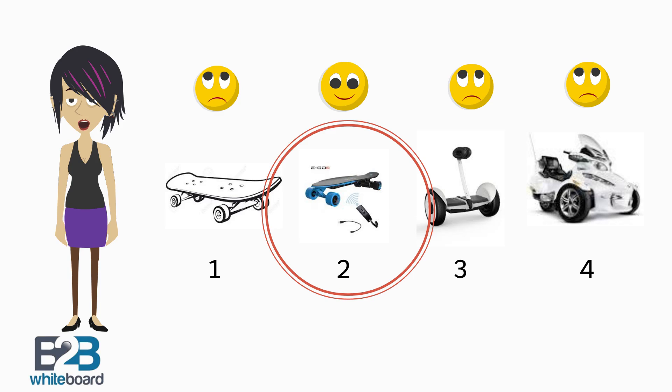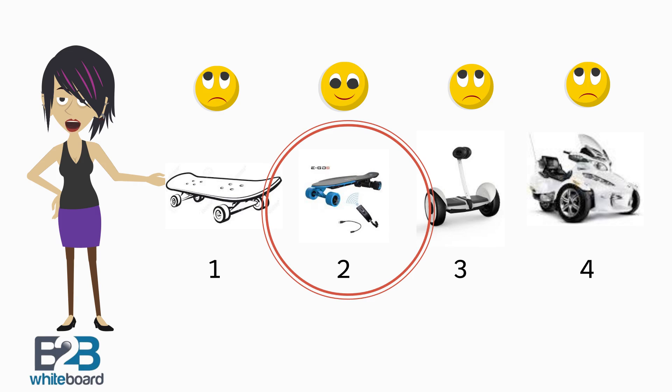For example, after researching the market we find that our best MVP option is the electric skateboard, before you make further investments in higher featured product options.